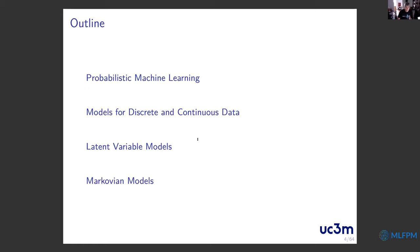The outline of the talk will be: first, a short introduction to probabilistic machine learning; after that, models for discrete and continuous data; then latent variable models, which will be the biggest part. While preparing the slides, I think I was a little bit optimistic, so I'm not sure if I'll cover the last topic on Markovian models for time series or sequential data.